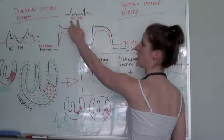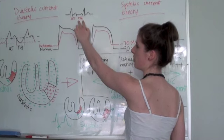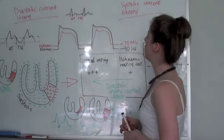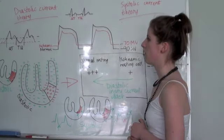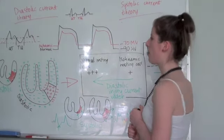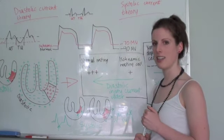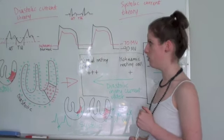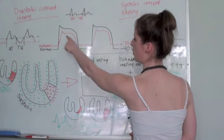Remember we're now looking at the QT interval instead of the TQ. So the whole idea with the systolic current theory is that injured or ischemic cells repolarize faster than the normal cells do. Hence what you see here.